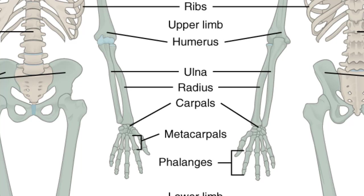The base of the hand contains eight bones, each called a carpal bone. The palm of the hand is formed by five bones, each called a metacarpal bone. The fingers and thumb contain a total of 14 bones, each of which is a phalanx bone of the hand.